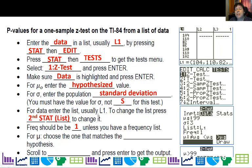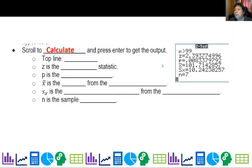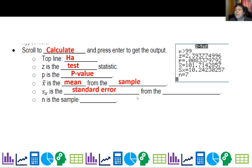Frequency should always be one unless you actually have a frequency list, which we rarely do. For the alternative hypothesis, choose the one that matches — you can select doesn't equal, less than, or greater than the hypothesized value. Then scroll down, press CALCULATE and ENTER. Your output will show: the top line is your alternate hypothesis, z is the test statistic, p is the p-value — it starts with p so that should be easy to remember — x-bar is your sample mean, Sx is the standard error from your data, and n is the sample size.